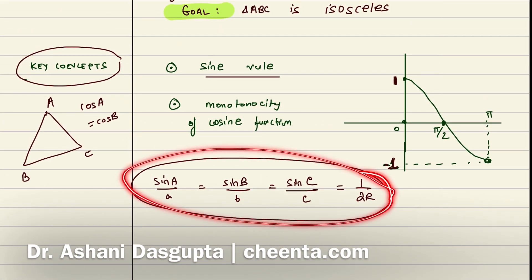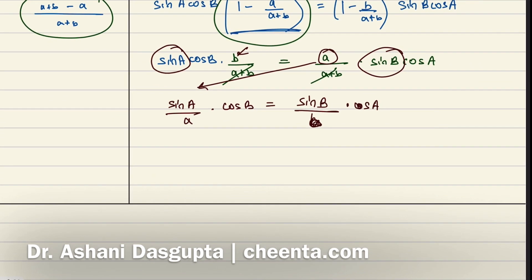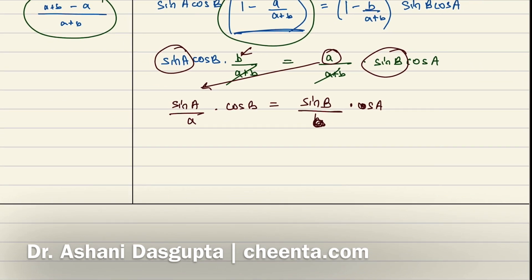Now if we can say from here that angle B equals angle A, if we can say this, then the triangle would be isosceles.